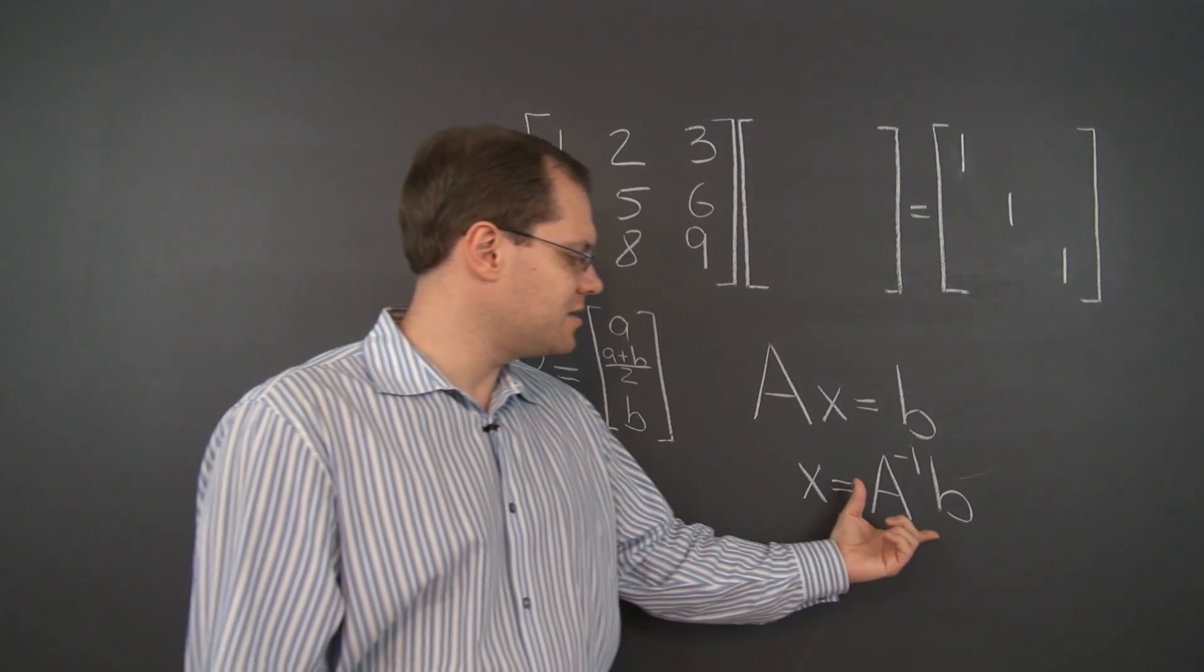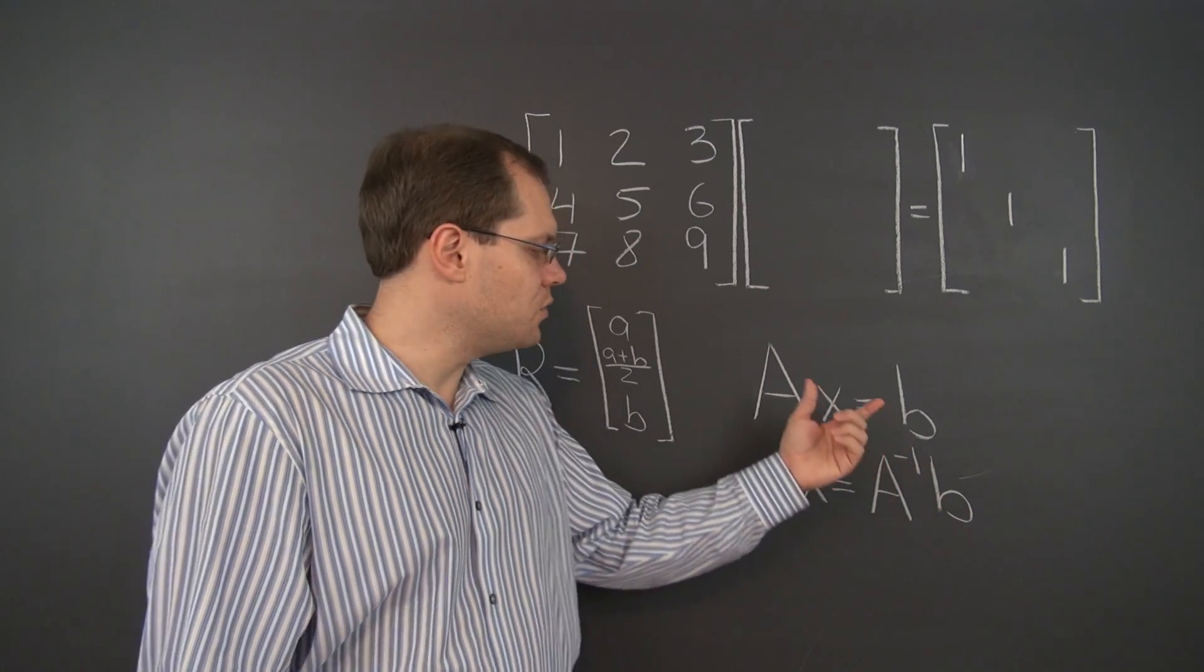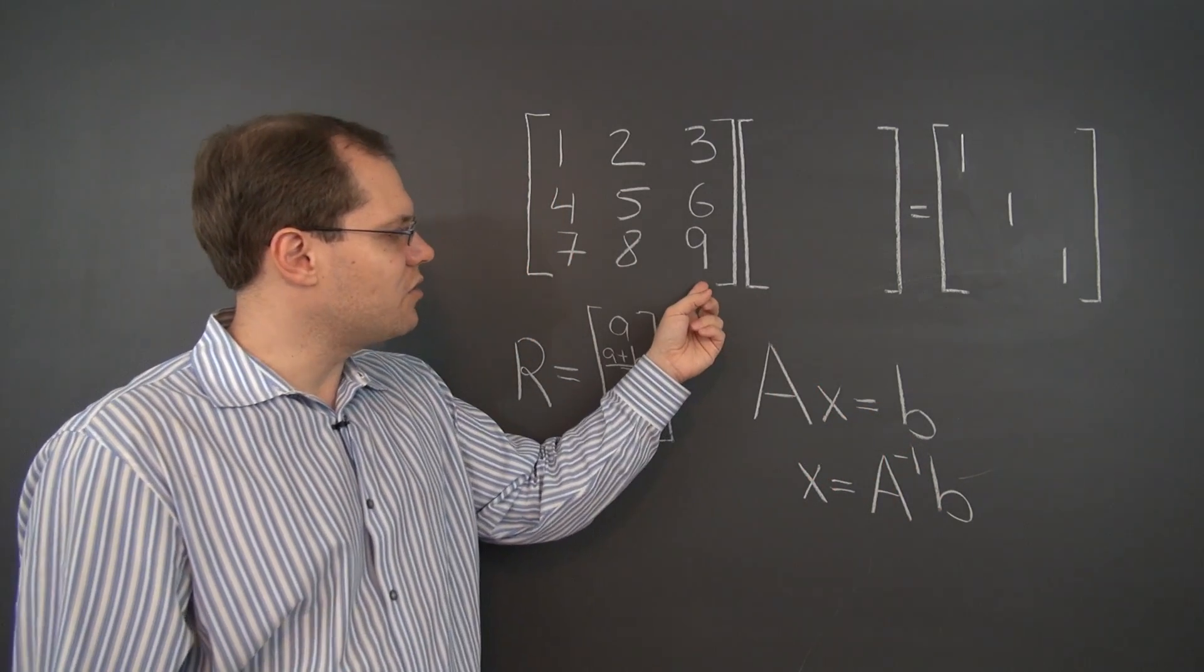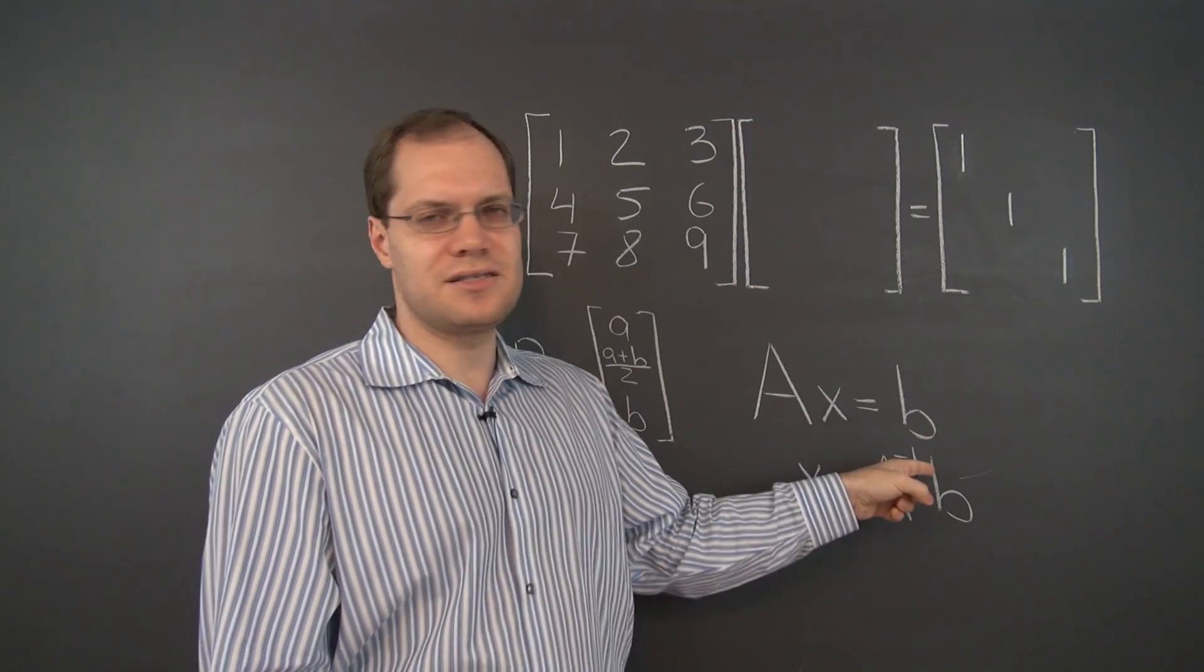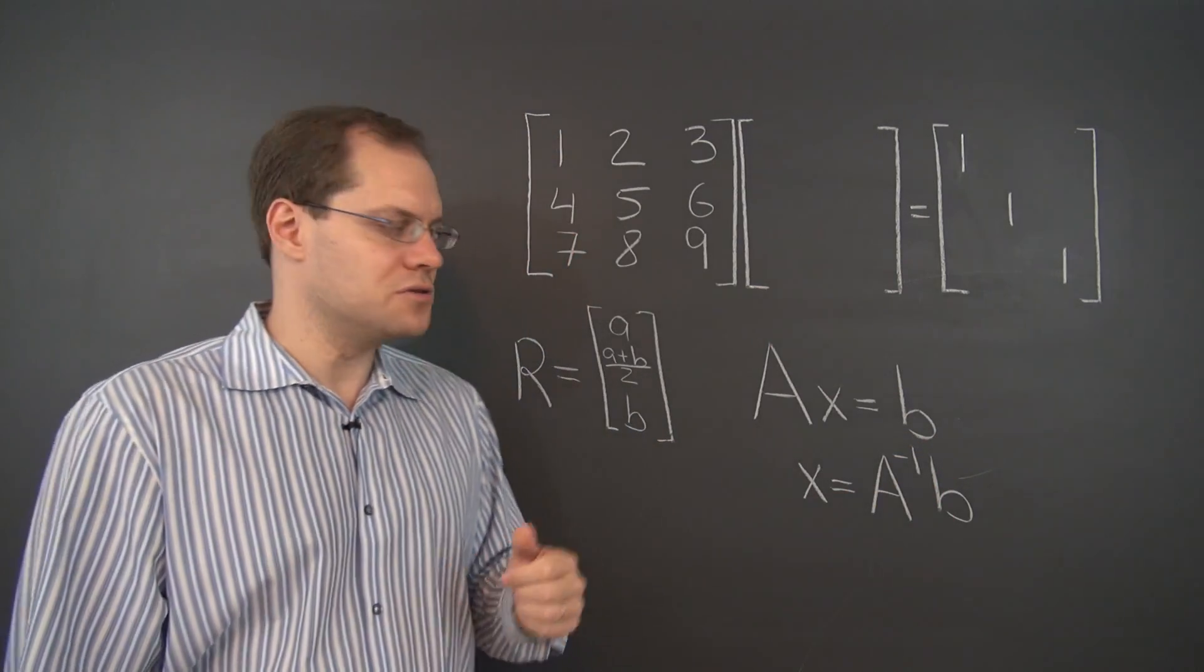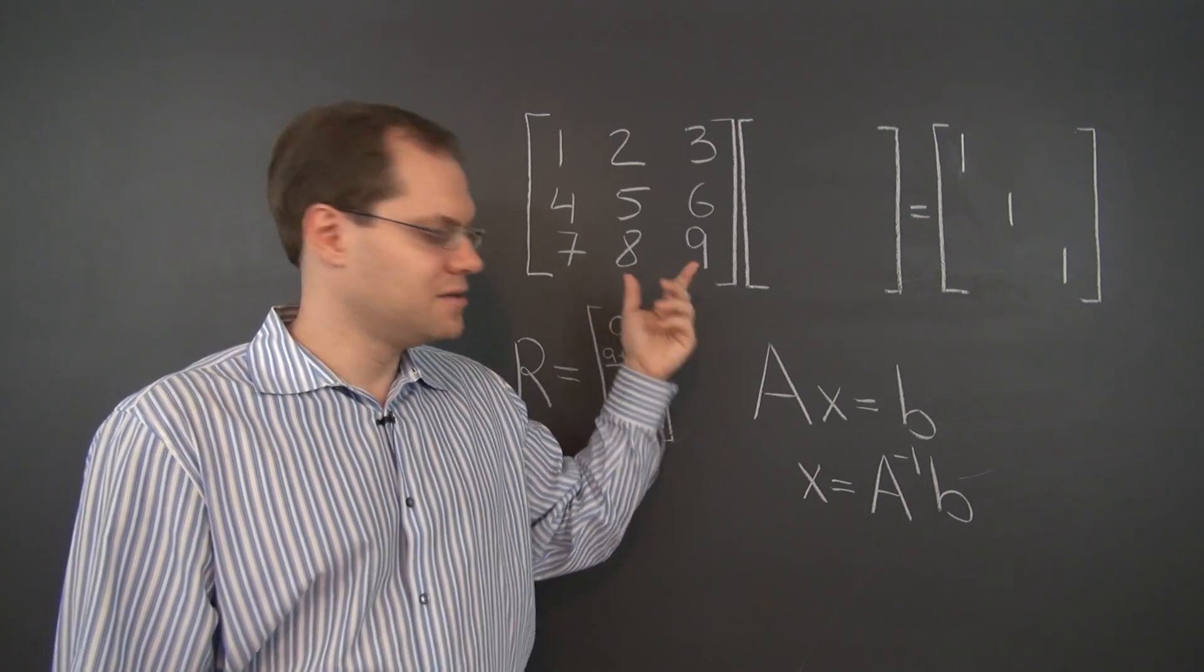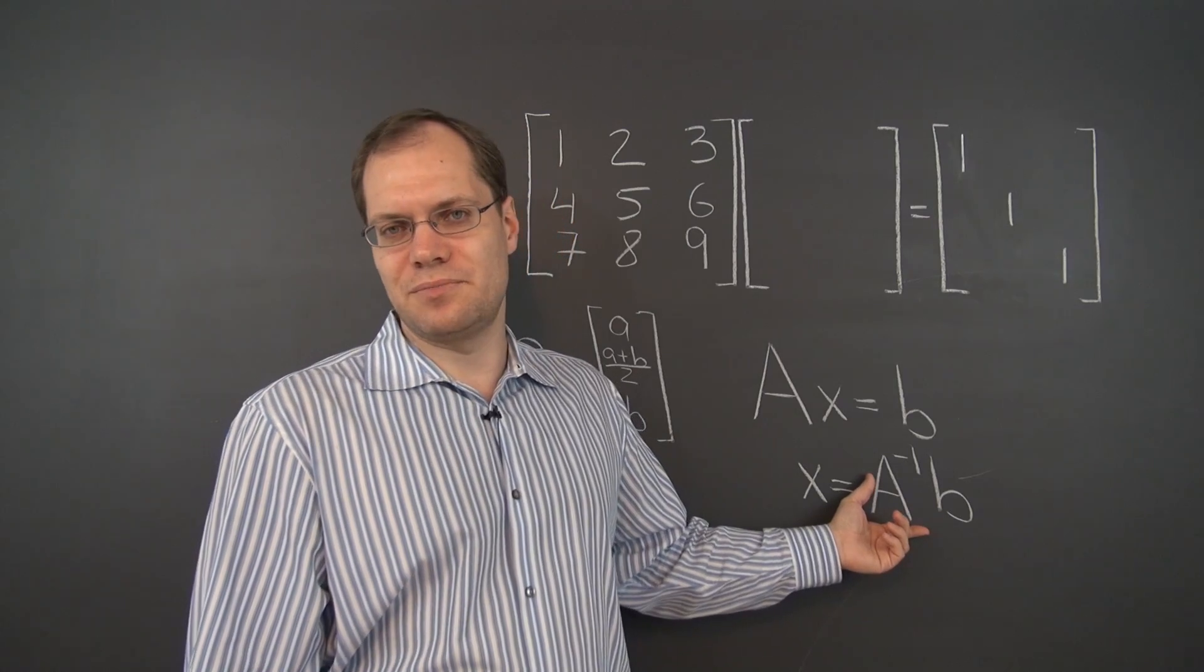And the second contradiction is that this also indicates that there's only a single solution. And we know that for any system that involves this matrix, if there is a solution, there are necessarily infinitely many solutions. Because the system has a non-trivial null space. So that would be contradiction number two.